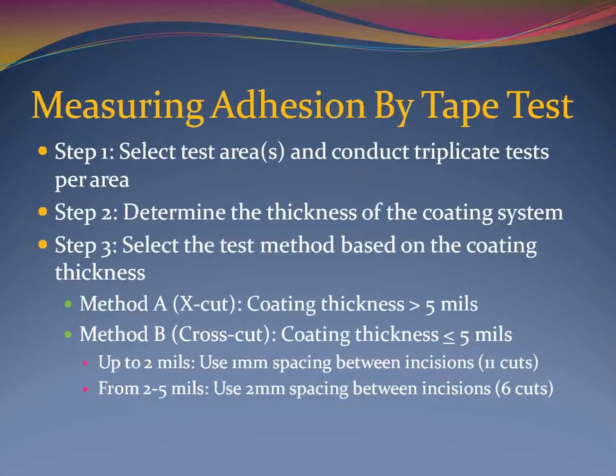Selecting a test area is perhaps the most difficult part of adhesion testing, particularly if you are evaluating an older coating system that has been maintained by touch-up painting over many years. It is well beyond the scope of this webinar to provide direction on where to test and how many tests to perform. However, you should test several areas and perform triplicate tests in each area to ensure you are obtaining representative adhesion data. If you are testing the adhesion of a new coating system, you may want to minimize the number of locations to reduce the amount of touch-up required.